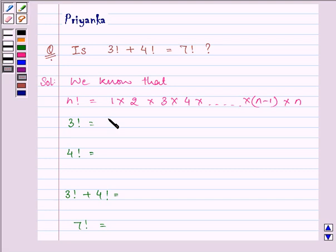3 factorial means 1 multiplied by 2 multiplied by 3. That gives us 6. 4 factorial means multiplying all natural numbers from 1 to 4. That gives us 24.